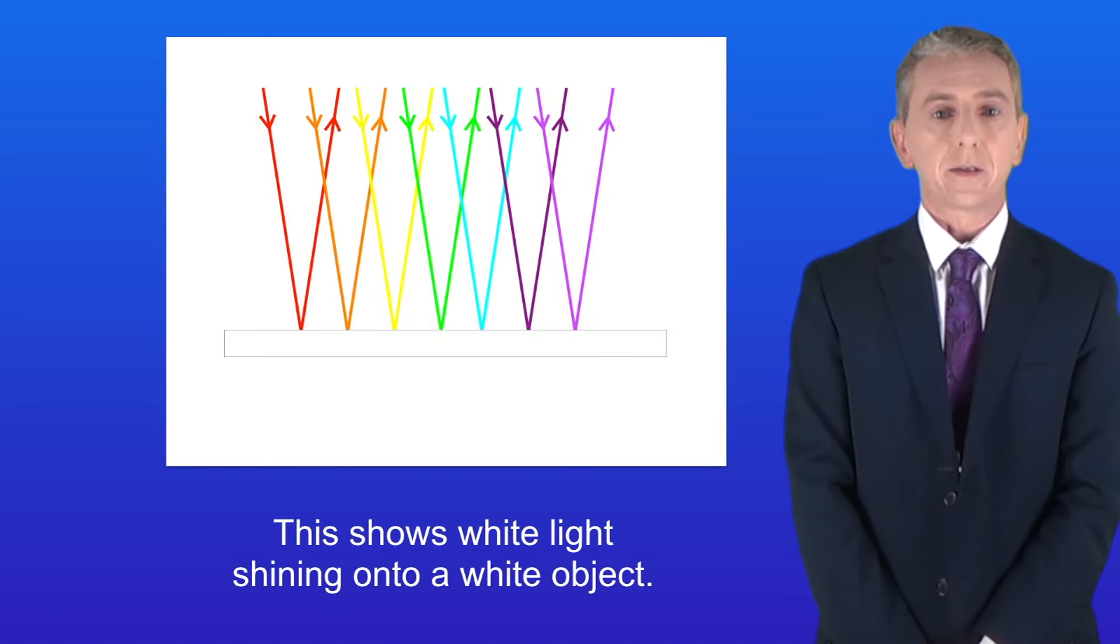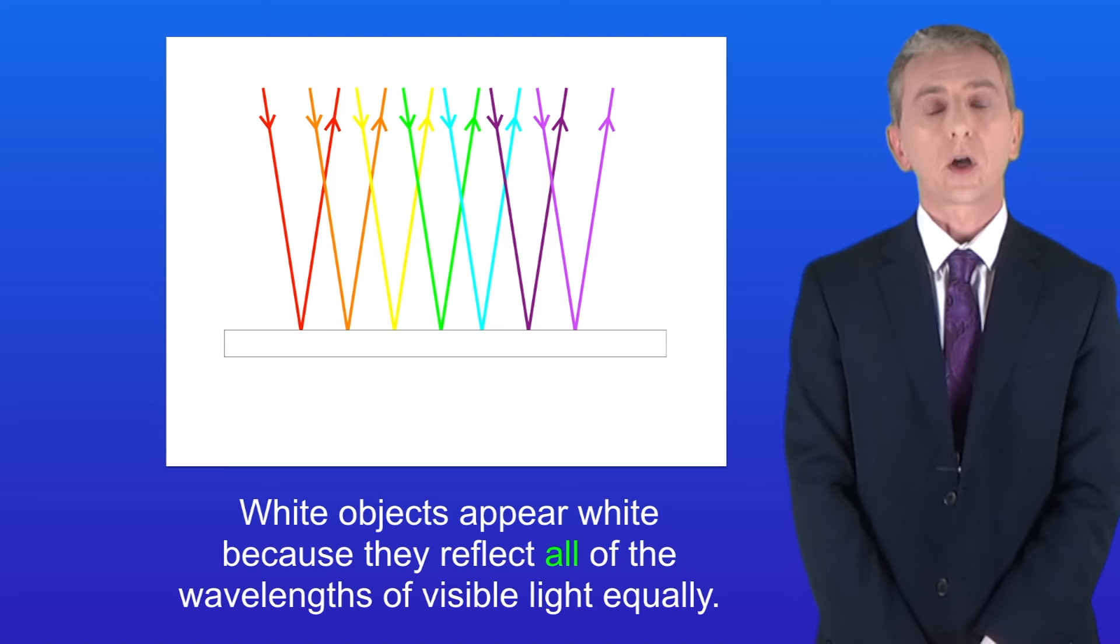I'm showing you here white light shining onto a white object. White objects appear white because they reflect all of the wavelengths of visible light equally.